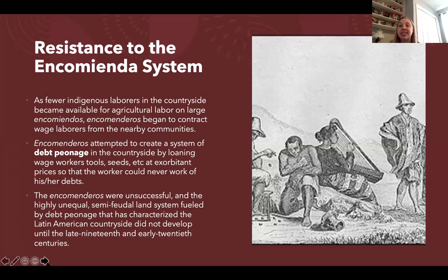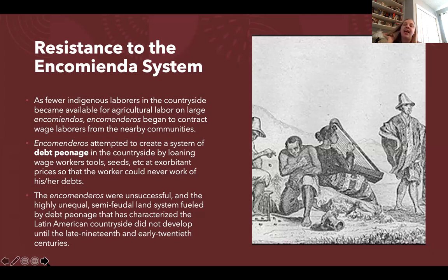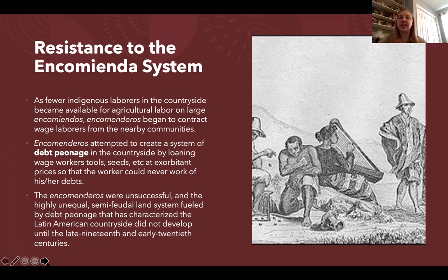Indigenous peoples also resisted the encomienda system — fewer indigenous laborers in communities eligible for service forced encomenderos to contract wage labor. The encomenderos tried to make these wage laborers into debt slaves by loaning tools and seeds at exorbitant prices that could never be paid back, tying workers to their land. However, they were unsuccessful in the colonial period at creating the system of debt peonage that would not develop until the late 19th and early 20th centuries.